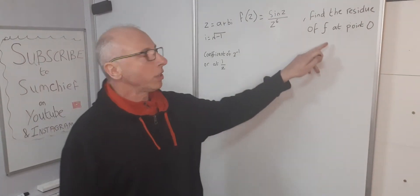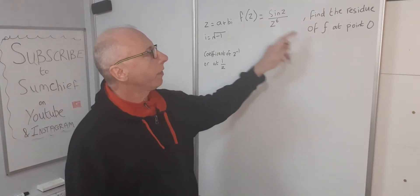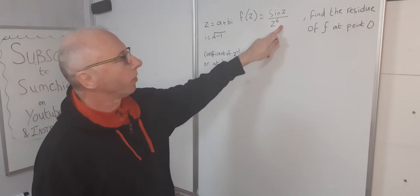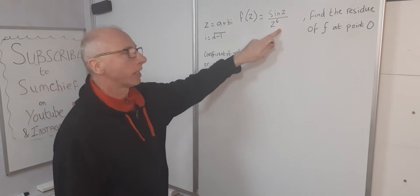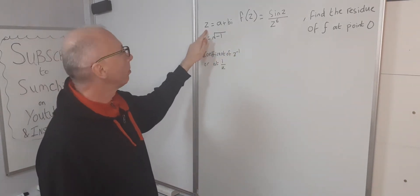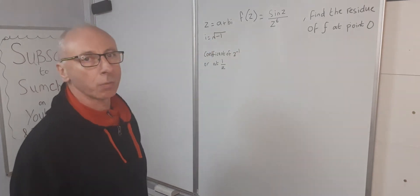In this video we're looking for the residue of this function f at point zero. The function is sine over z over z to the sixth. Looks a little bit intimidating but we can get around it, and as always in complex numbers z is a plus bi where i is square root of minus one.